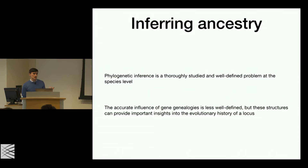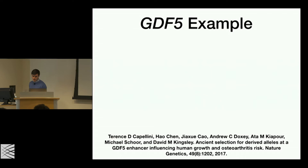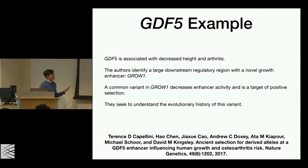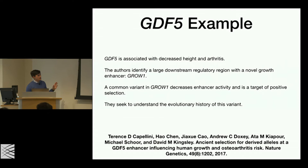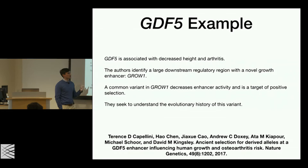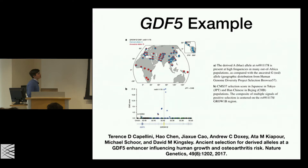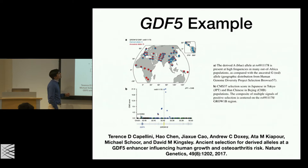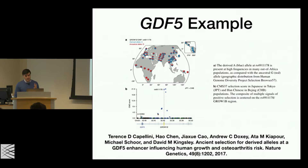To see why that matters, let's look at the GDF5 example from Cappellini et al. GDF5 is a gene highly associated with decreased height and arthritis — I think it has one of the highest effect sizes of any height-related SNP. In this paper they identify an enhancer region downstream called GROW1, with a novel growth enhancer. Specifically, they find a common variant in GROW1 that is a target of positive selection and decreases enhancer activity. They want to understand what's the story with this variant.